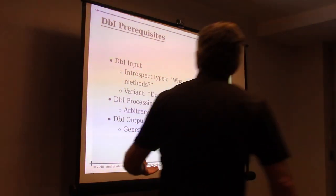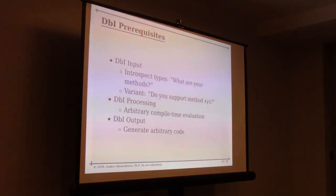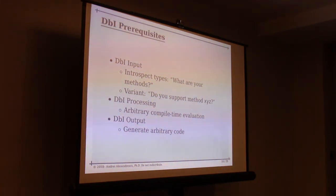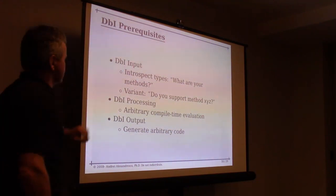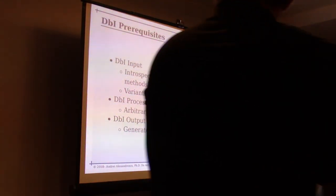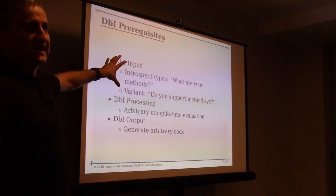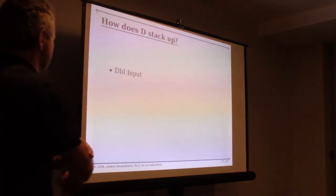The first thing you want is to convert strings into code. D has a primitive called mixin: you give it a string and it compiles it as code. Lisp has that, and a number of languages do too — so this is not new in a sense. What's nice is that they all come together at compile time. So we have three facilities: for input we have introspection and traits; for processing we have compile-time function evaluation and static if; and for output we have things like mixin. Template expansion can also be considered a form of output expansion — if you come from a C++ background, templates are a macro that generates specialized code. With mixin you get to the next level because you can expand arbitrary strings into code.